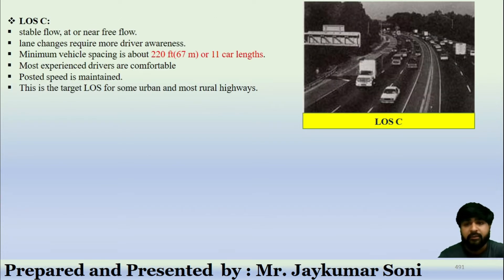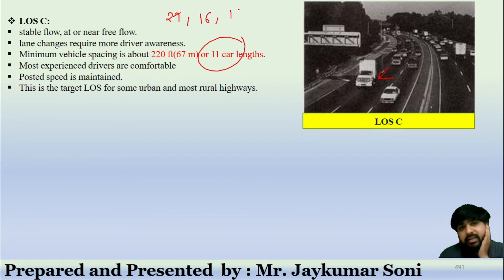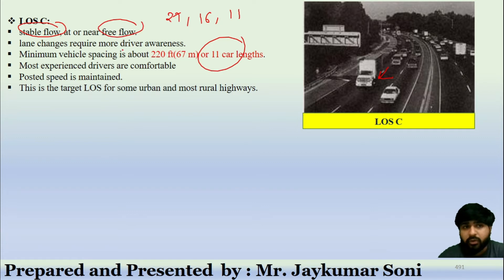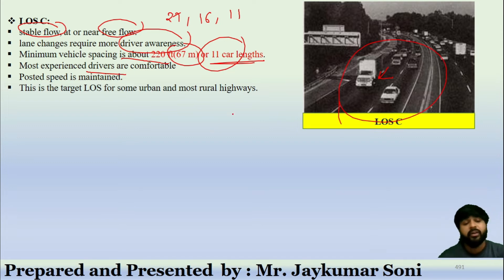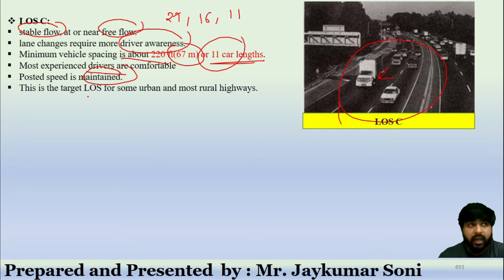Level of service C is called stable flow or near-free flow. The spacing is reduced to 11 car lengths, approximately 67 meters. Lane changes require more driver awareness. Most experienced drivers will feel comfortable, but new drivers may face hindrance. The posted speed is maintained, and LOS C is the target level of service for some urban and most rural highways.